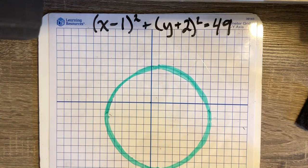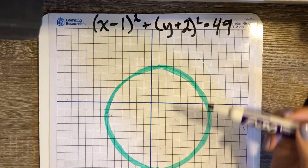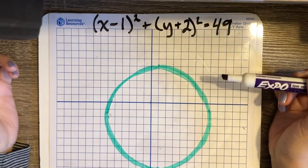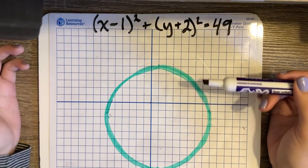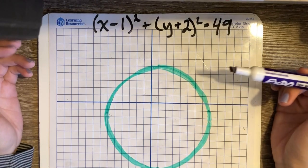So in the previous video that I had you watch, it gave you an explanation using Pythagorean theorem of why when a circle is centered at the origin, the equation is x squared plus y squared equals r squared.